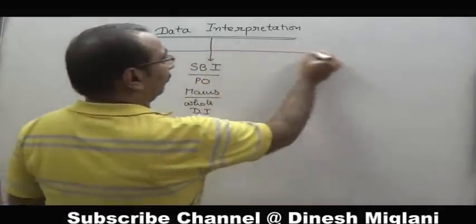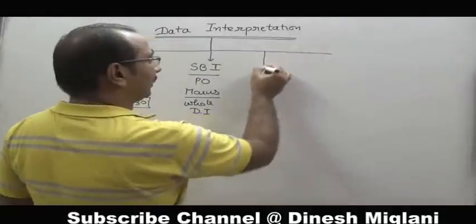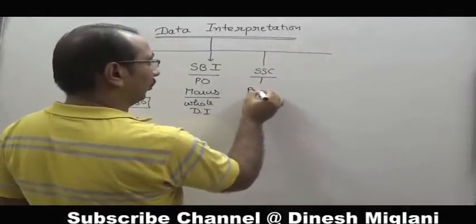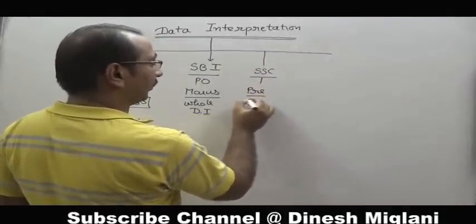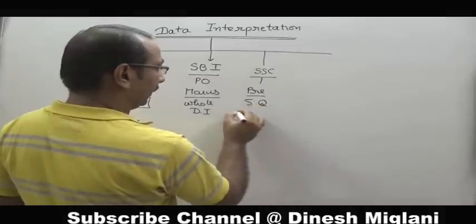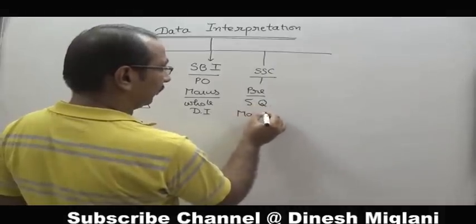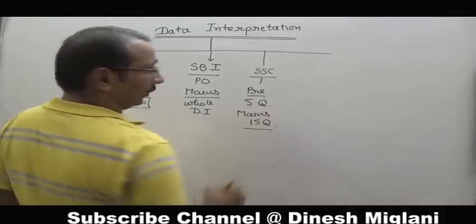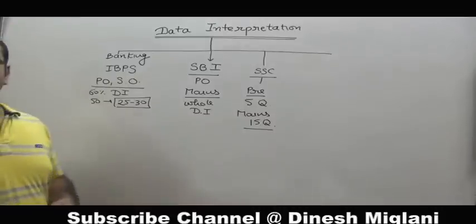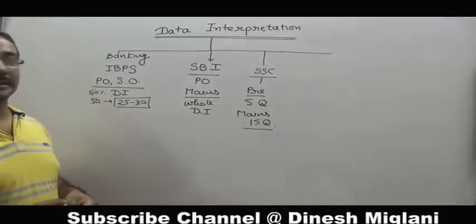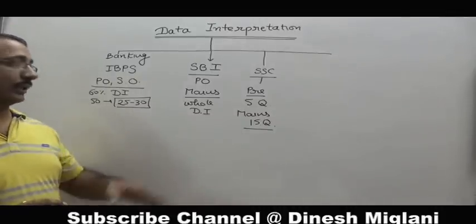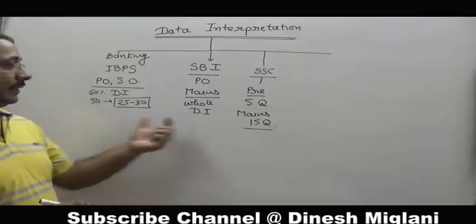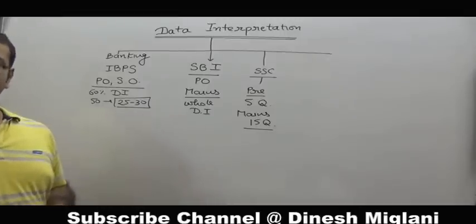In SSC, in the pre-exam, only one set of five questions is given. And in the main exams, around 15 questions are from DI. The type of questions asked in SSC exam is comparatively very simple — not as complicated as compared to the IBPS or State Bank of India examinations.